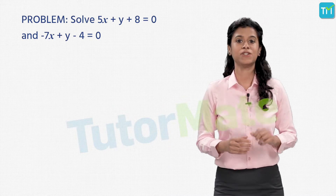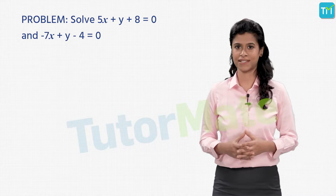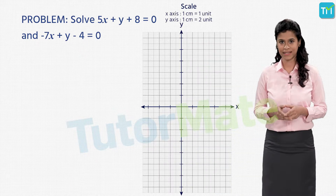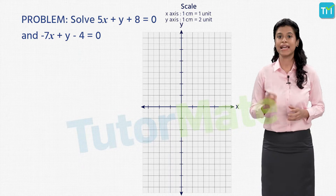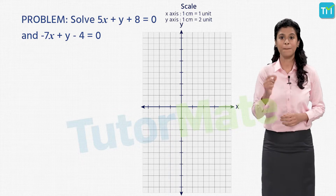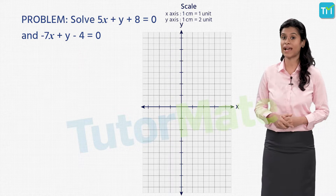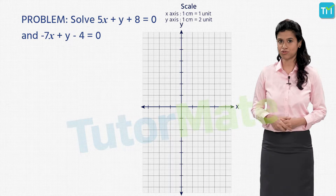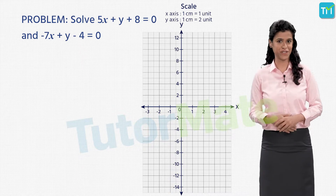Let's begin by drawing the graph for each of these equations. First draw the x-axis and the y-axis. Mark the intersection of these axes as 0, which is the origin. Next, mark equidistant points on the x and y-axis and number them 1, 2, 3 and so on. So let's move on to plotting the equations.